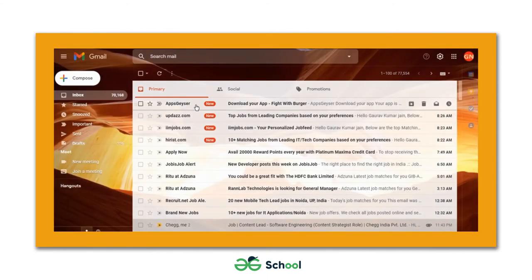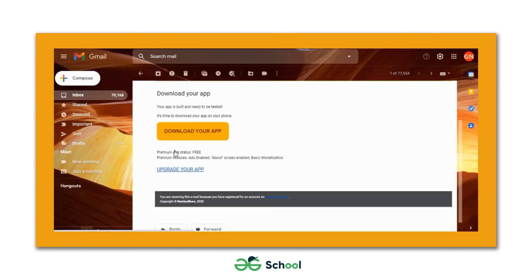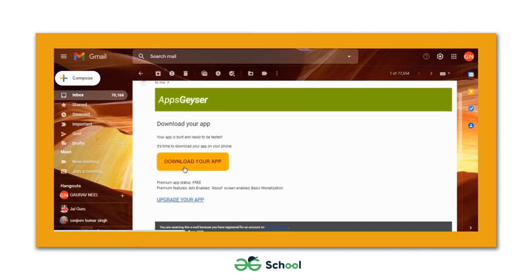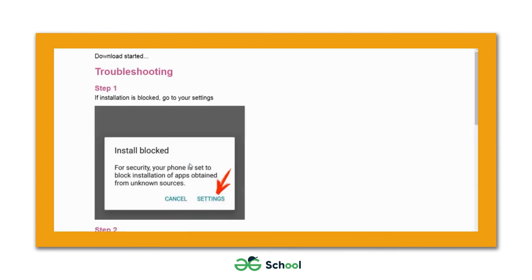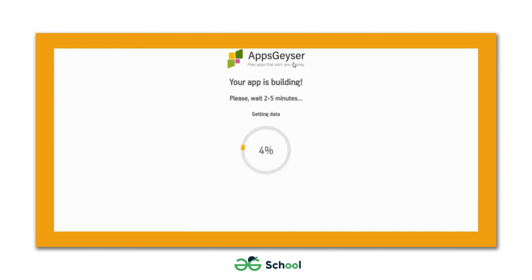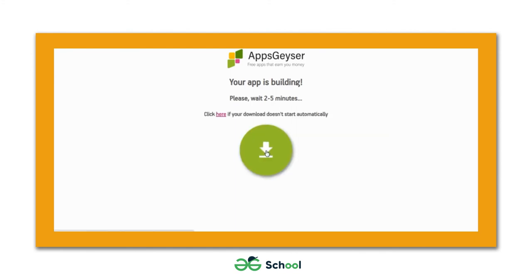I've received an email. It says 'Download your app' — let's hit the button. We get redirected to a page where Apps Geyser is building the app. It will take two to five minutes to build completely. Let's hit the download button.